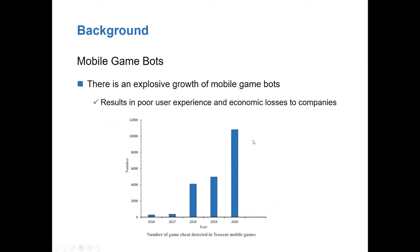However, with the popularity of mobile games, there is an explosive growth of mobile game bots. They pretend to be players playing games and react with incredible speed, so as to obtain an unfair advantage against other players. These game bots bring frustrating experiences to honest players, resulting in the loss of players and consequent economic losses to gaming companies. Therefore, in order to distinguish game bots from honest human players, an effective game bot detection method is urgent and critical.